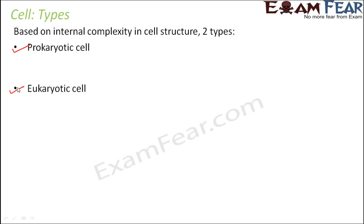So prokaryotic — the word 'pro' means something which is first formed or before, and 'karyon' means nucleus. So prokaryotic would mean before a true nucleus. These are the cells where you do not have a true nucleus — you do not have a specific membrane-bound nucleus. That is what the name means.